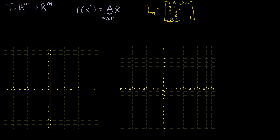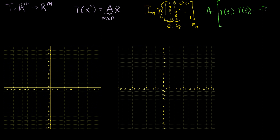We call each of these columns the standard basis for Rn. So this is column E1, this is column E2, and it has n columns, En. Each of these columns are of course members of Rn. We know that our matrix A can be represented as the transformation being operated on each of these columns: the transformation on E1, the transformation on E2, and so on all the way to the transformation on En. This is useful because it's easy to apply any transformation to each basis vector, which only has a 1 in its corresponding dimension and zeros elsewhere.